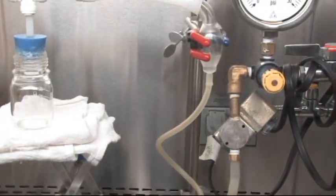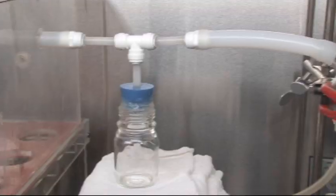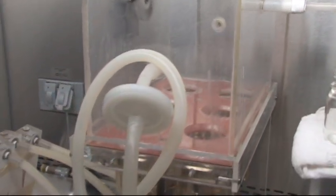A nebulizer is used to create an aerosol of bacillus atrophia spores. The box is hooked to a vacuum which draws the spores into the sample materials.